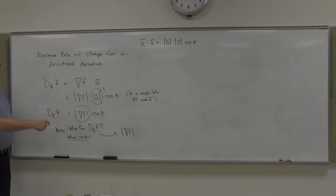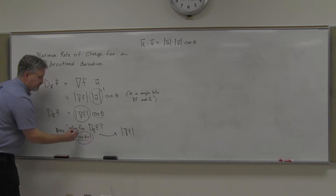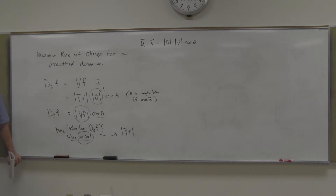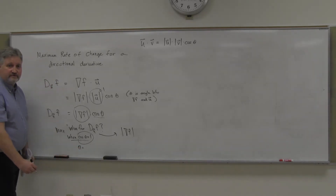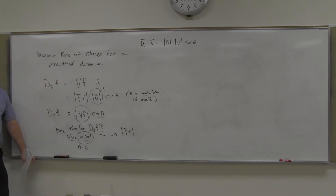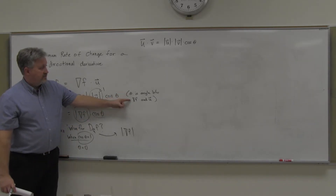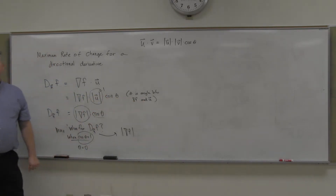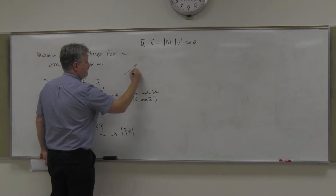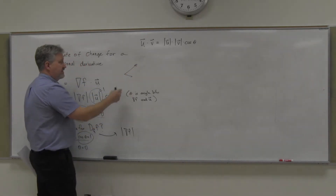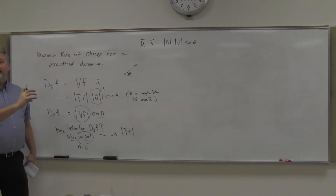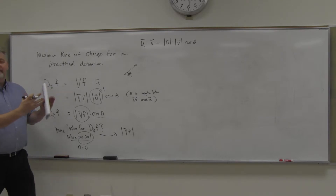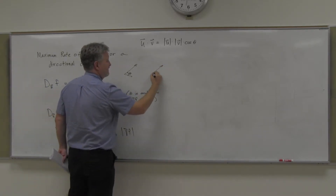There are a couple of ramifications. If the maximum is going to occur when cosine theta is one, what does that make theta? One value of theta that makes cosine equal one is zero. And theta is the angle between the gradient vector and the unit vector. So if the angle between the gradient vector and the unit vector is zero, what does that mean about the two vectors?